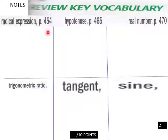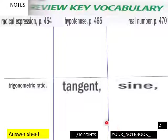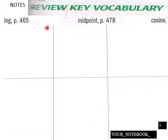Page two, more vocabulary: radical expression, hypotenuse, real number, trigonometric ratio, tangent, and then sine. You got ten points here for page two in your notebook.